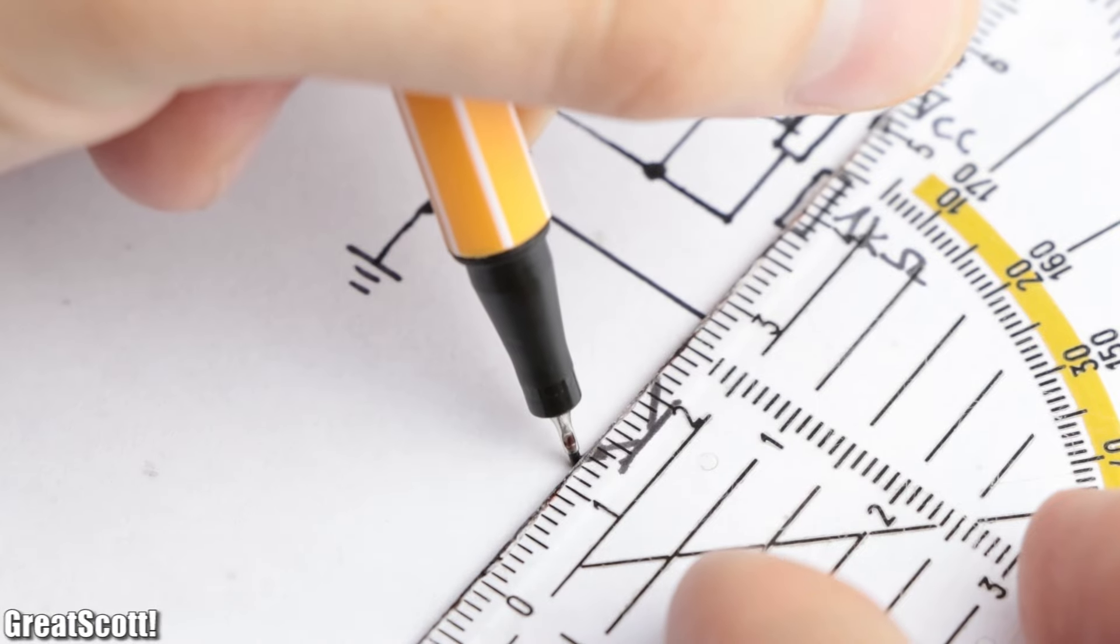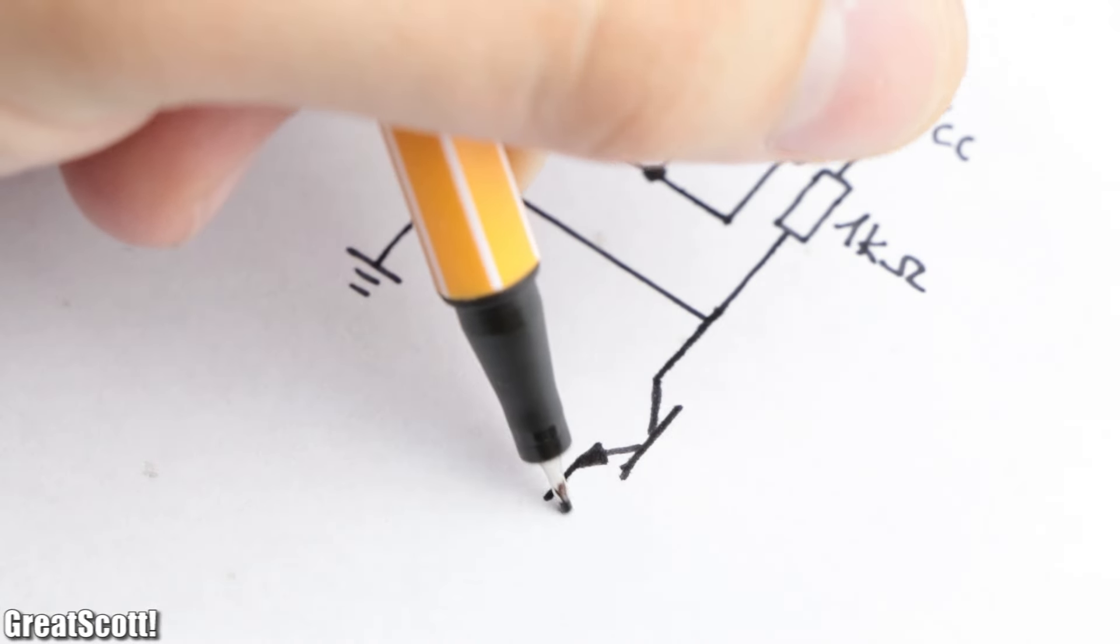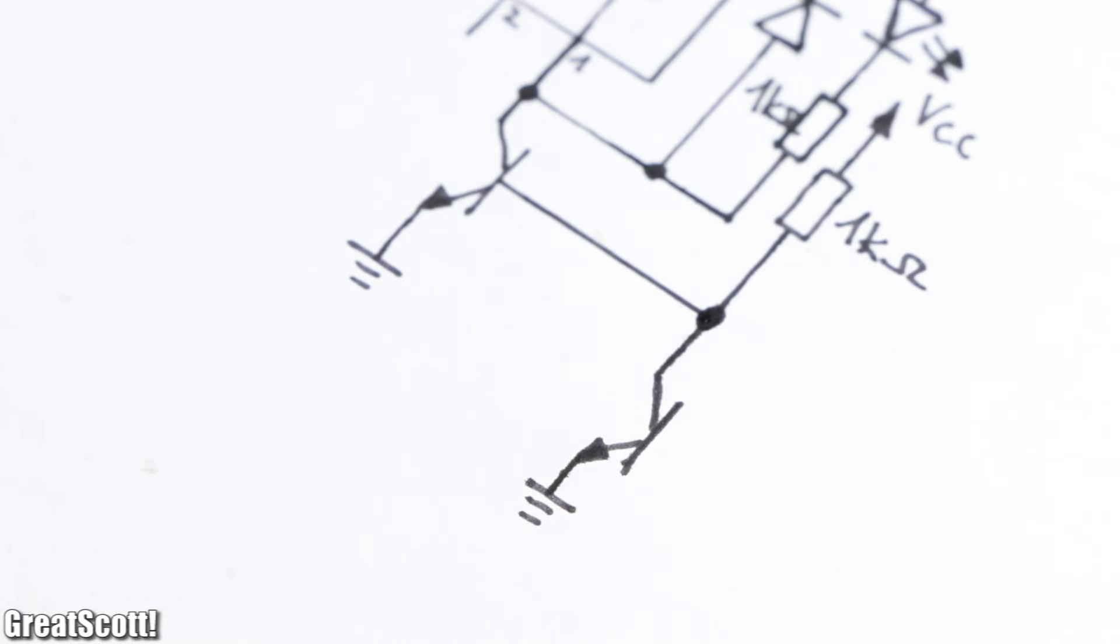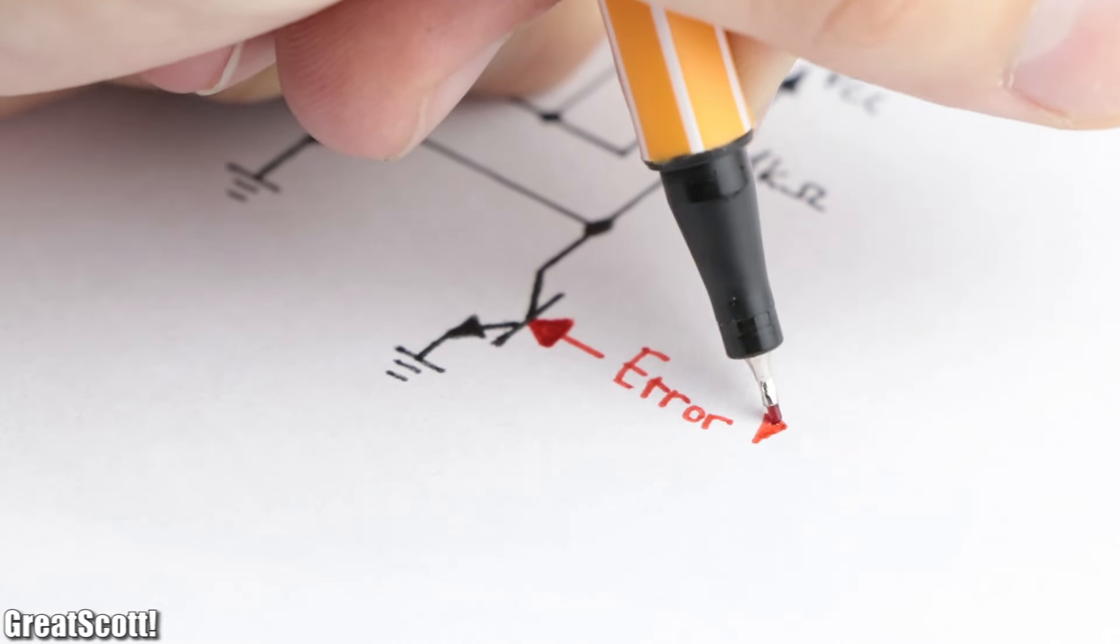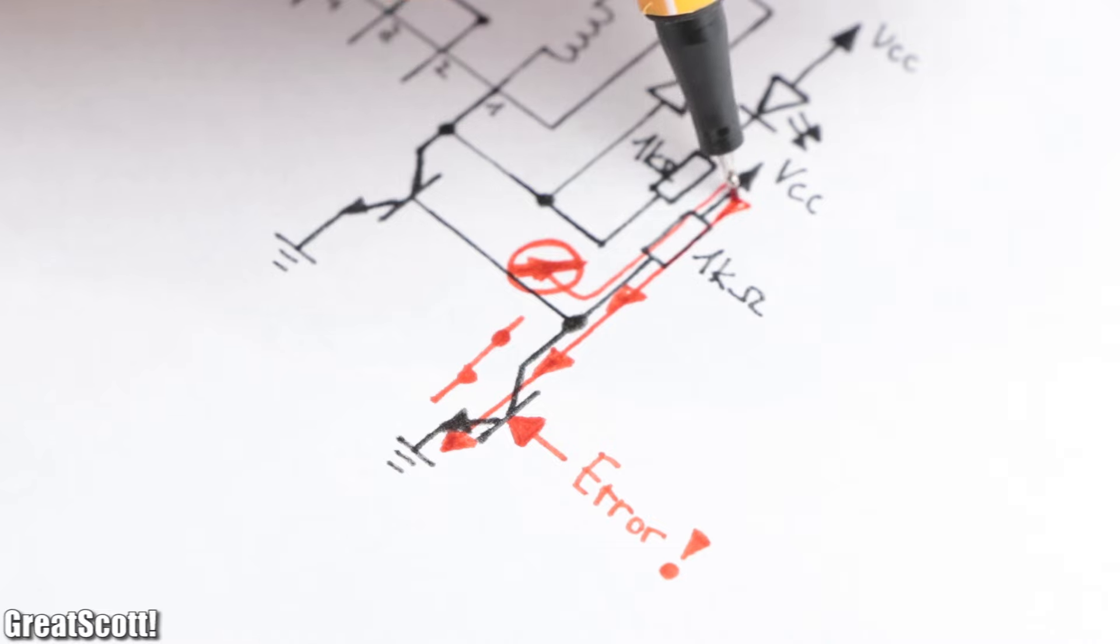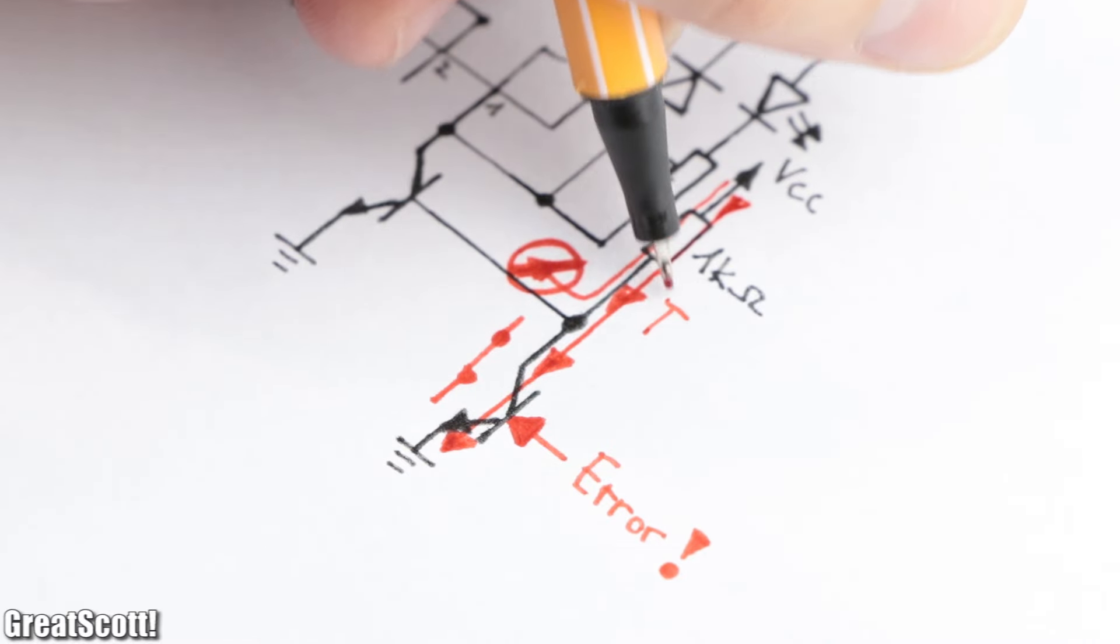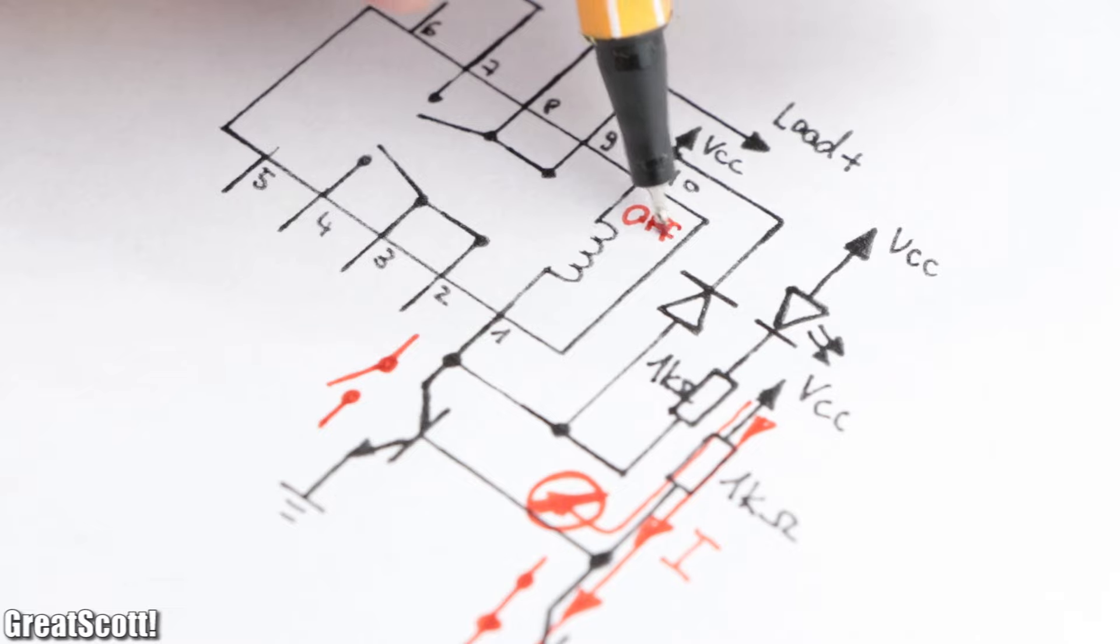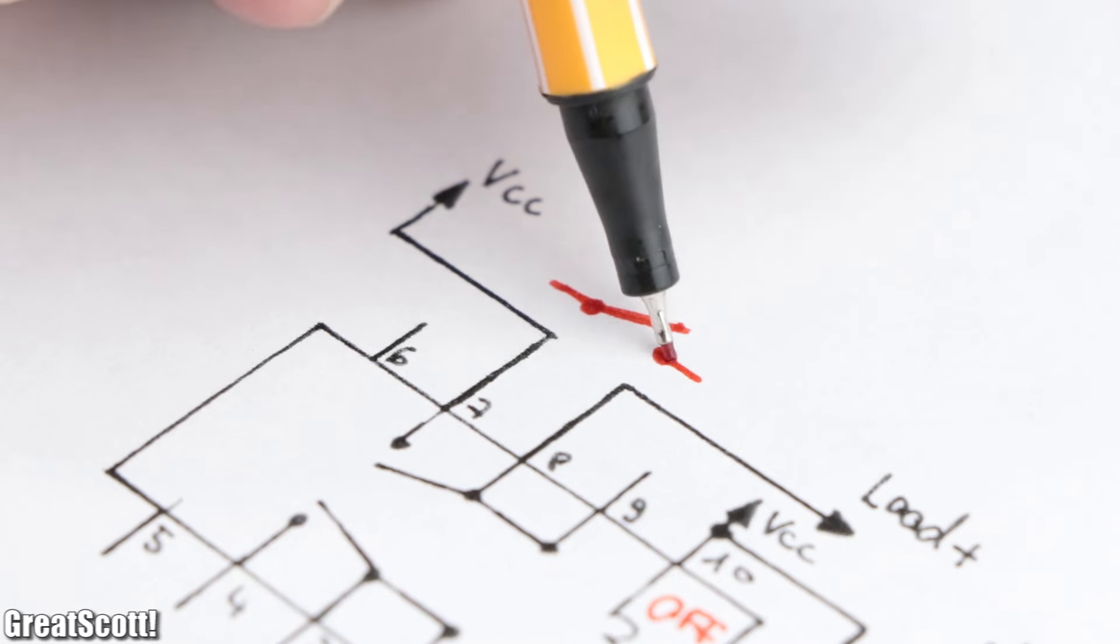And to deactivate the coil if a problem occurs, we can add a second NPN transistor to the base of the first transistor. If an error signal is applied to the base of the second transistor, the base current of the first transistor would flow through the second one and thus the coil would deactivate, the LED would turn off, and the contacts would open.